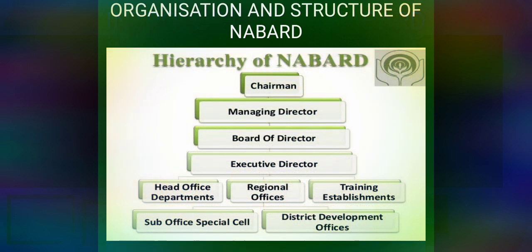Here is the organizational structure of NABAD. NABAD is managed by the Board of Directors, consisting of a Chairman, Managing Director, Board of Directors, and Executive Director. This includes two directors who are experts in rural economy or rural development, three directors from among those working in cooperative banks, three directors from the RBI, three directors from among officials of the Government of India, and two directors from officials of the State Government, all appointed by the Central Government.